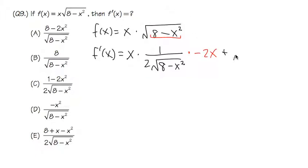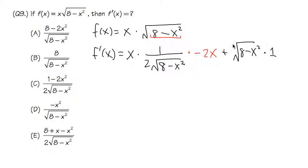Now we add the second function, which is just the square root of 8 minus x squared, multiplied by the derivative of the first function. The derivative of x is just 1, so we multiply by 1. That gives us our full expression, and now let's see if there's anything we can cancel or simplify.